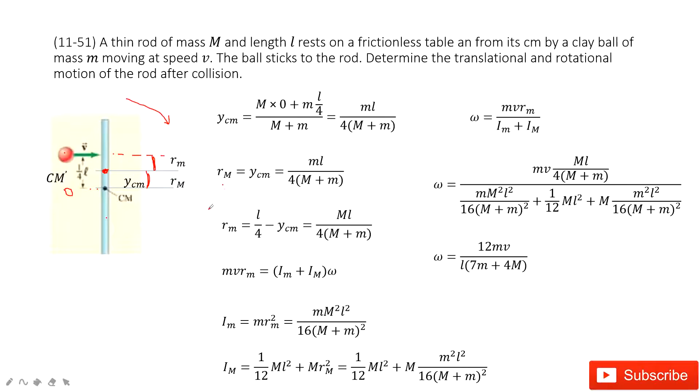So now this length, r small m, is L minus the y_cm. Then we get this value.